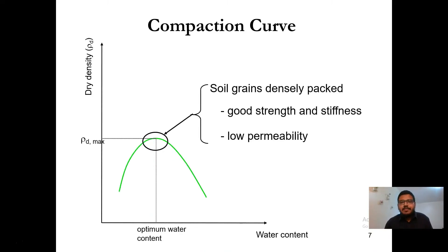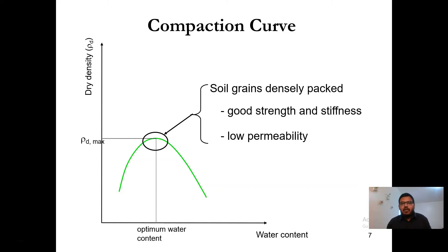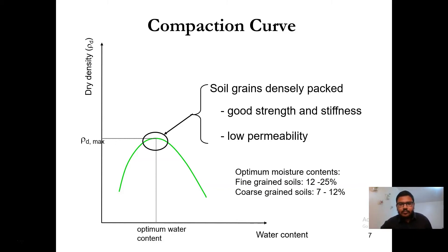By performing multiple trials at different moisture contents, we obtain different dry densities. We can then plot the dry density versus water content curve, which has a parabolic shape. The maximum point of the curve corresponds to the maximum dry density, and the corresponding water content is the optimum moisture content (OMC). In that region, soil grains are densely packed, giving good shear strength, stiffness, and reduced permeability.